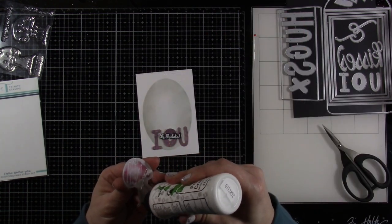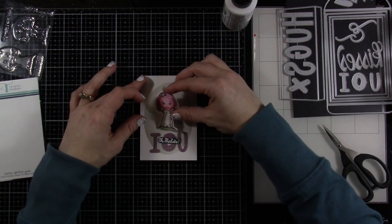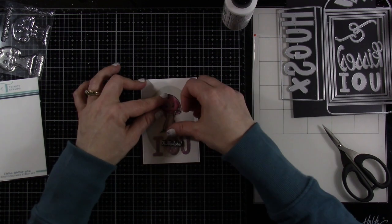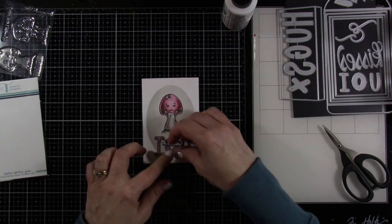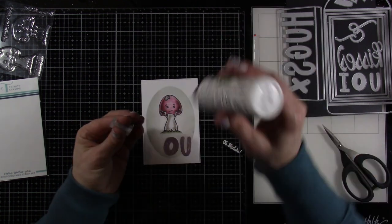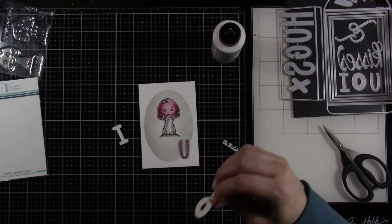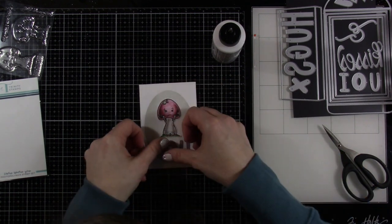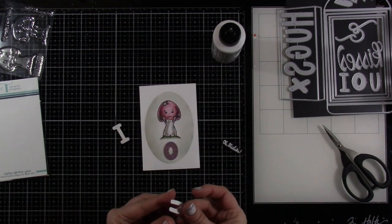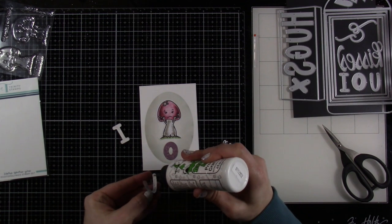So I'm going to go ahead and glue down our mushroom. You could use foam tape, that would be fun too, but I'm just going to glue that down. And then I'm going to start gluing down our letters. I'm going to start with the O. That way I'm at least trying to center it a little bit better than if I had just started with the I. So if you start with your very middle letters, you have a better chance of having them centered.